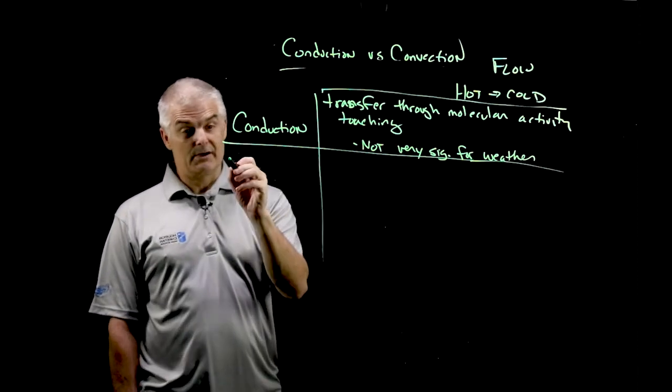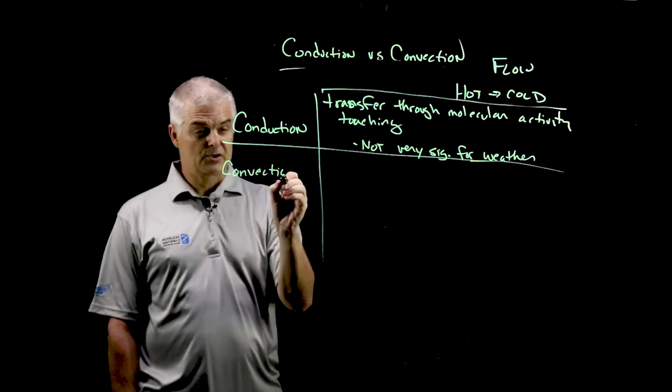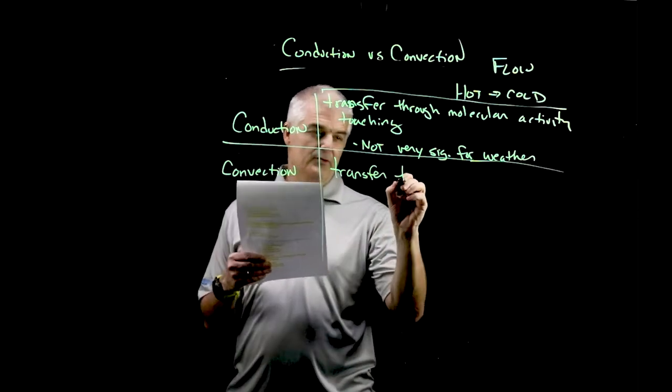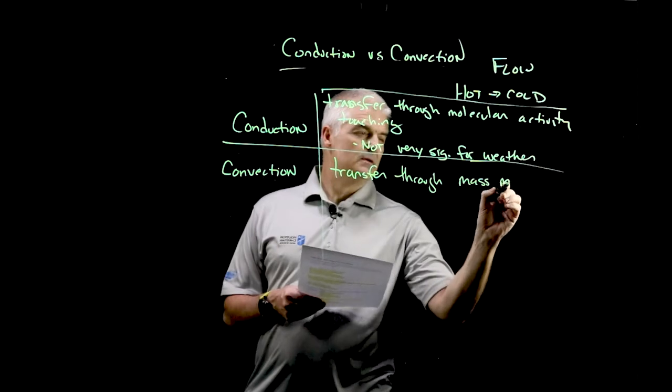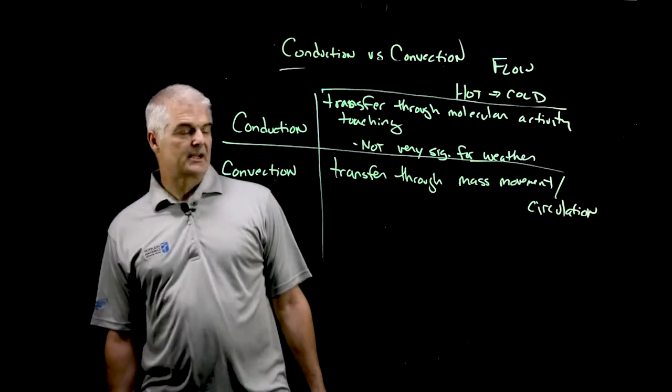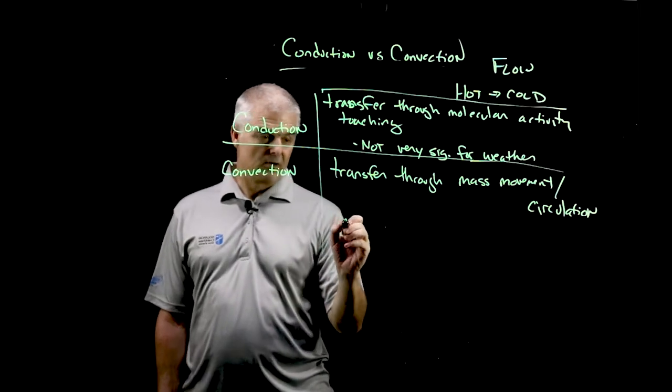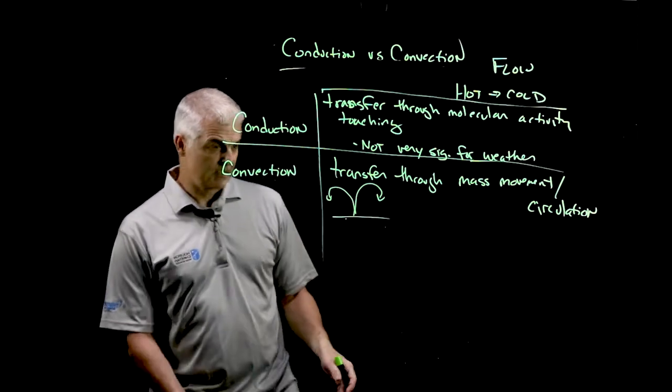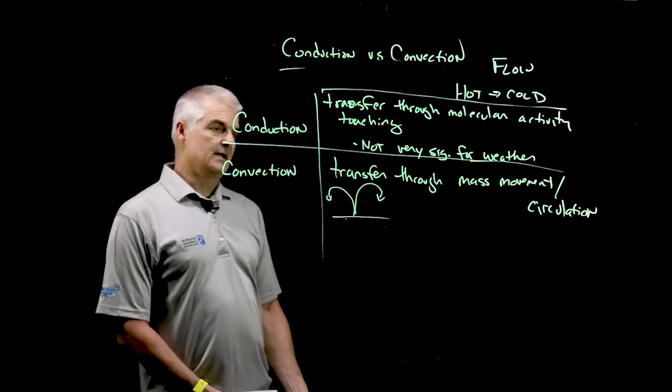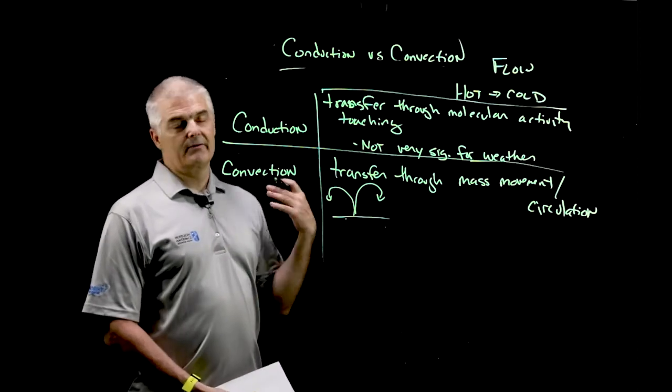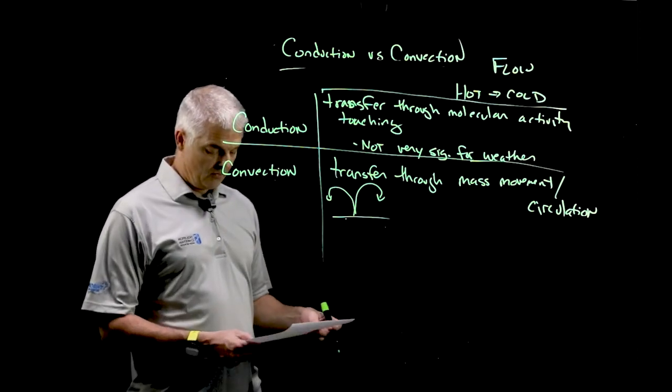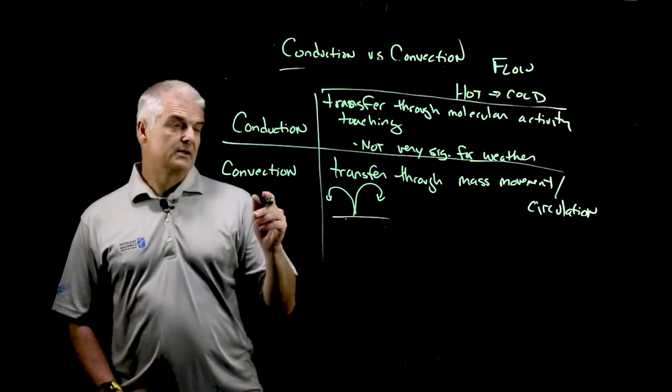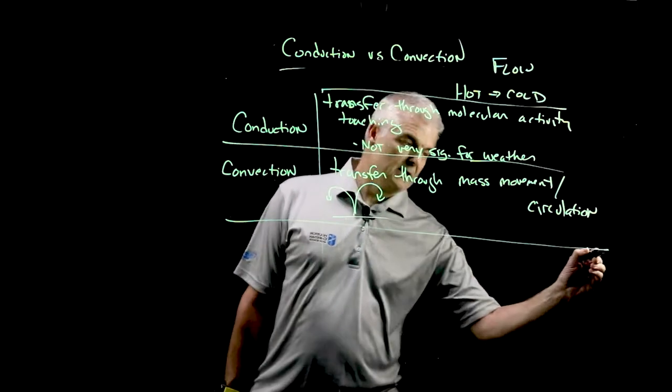Which leads us to the second one. And we've talked about this in class a lot. Convection. We've talked about convection cells. What is convection? It's transfer through mass movement slash circulation. As we've talked about before, you've got a heat source and we get this pattern that looks like this. We've done this with beans in class. You've played this game. This is very, very important for weather. And this is what causes wind and we'll talk about that in a subsequent video. So this is hugely important when we talk about weather.